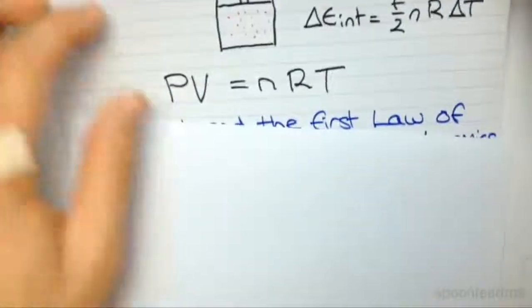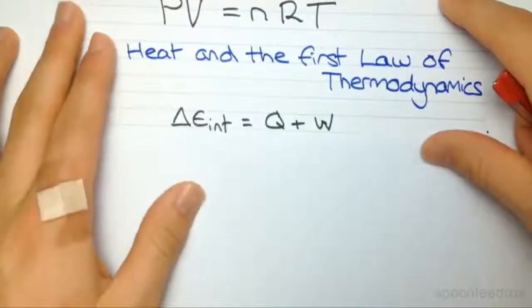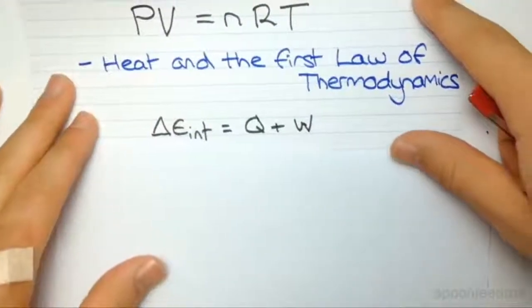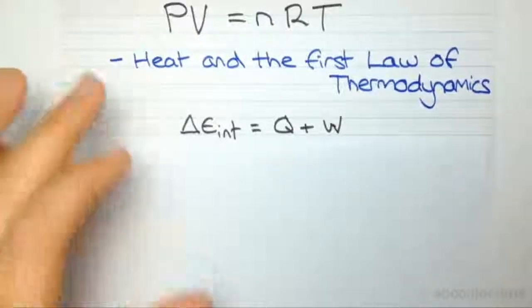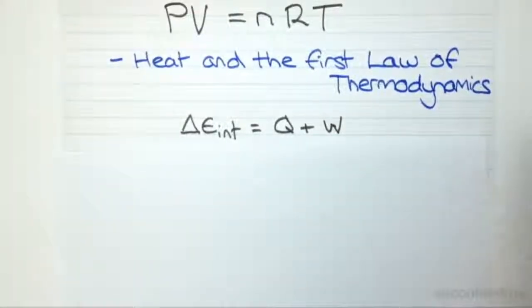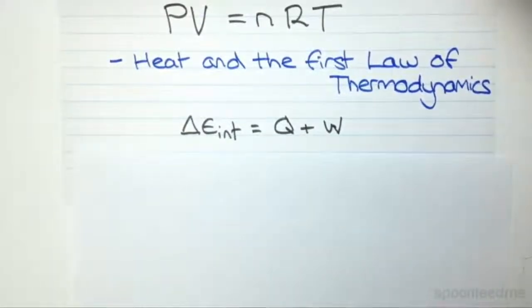The final topic in thermodynamics is called heat and the first law of thermodynamics, which is actually represented by this little equation here at the bottom. And basically what it says is that the only way to change the internal energy of a gas is by heating it or by doing work on it. Two concepts that we won't understand at the moment, but they'll become really important when we come across it.